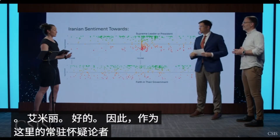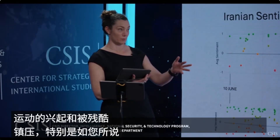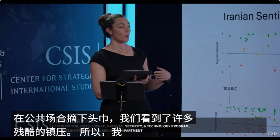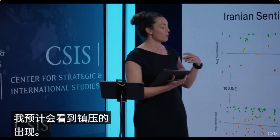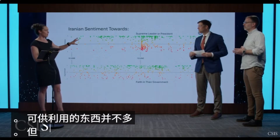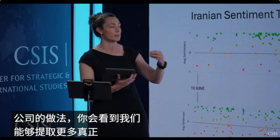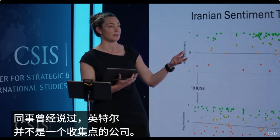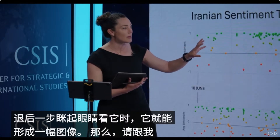As the resident skeptic here, having watched Iranian history unfold for the last 20 or so years and seen multiple protest movements come up and be brutally squashed — particularly the women protesting Mahsa Amini's death and taking off their headscarves in public — we've seen a lot of brutal repression. At my heart of hearts, I really do hope this is different. However, I'm expecting to see the repression show up. What we're used to seeing in Iran is really this band right here of very scattered data points — there's just not a whole lot to work with. But through what Errol's company and others are doing, you're seeing an ability to pull out more interesting pieces of data to get a more complete picture. A former colleague used to say that intelligence is not about collecting dots, it's really pointillism — you take all these little data points and hope that if you stand back and squint at it, it forms a picture. So talk to me about your points, Errol — why do you feel like these points are leading you in the right direction? Why are you trusting the data you're getting out of Iran?